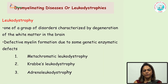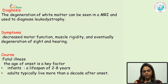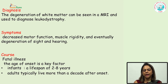Coming on to another important cause, we should rather call it dysmyelination because there is ill-formed or defectively formed myelin. It is a group of disorders characterized by degeneration of white matter in the brain due to defective formation of myelin. These are basically genetic enzyme defects. The diseases can be classified as: number one, metachromatic leukodystrophy; number two, Krabbe's disease; and third, adrenoleukodystrophy. The diagnosis can be made by seeing degeneration of white matter on MRI. Patients usually present with decreased motor functions, muscle rigidity, and eventually degeneration of sight and hearing. If the disease presents in an infant, the lifespan is usually 2 to 8 years, and if it presents in adults, they typically live more than a decade after onset.